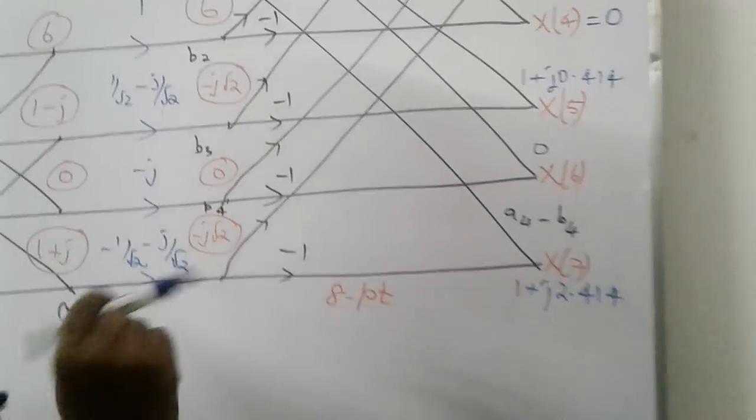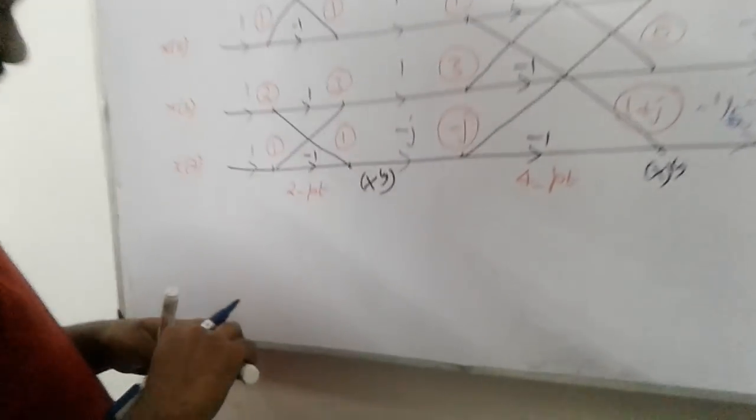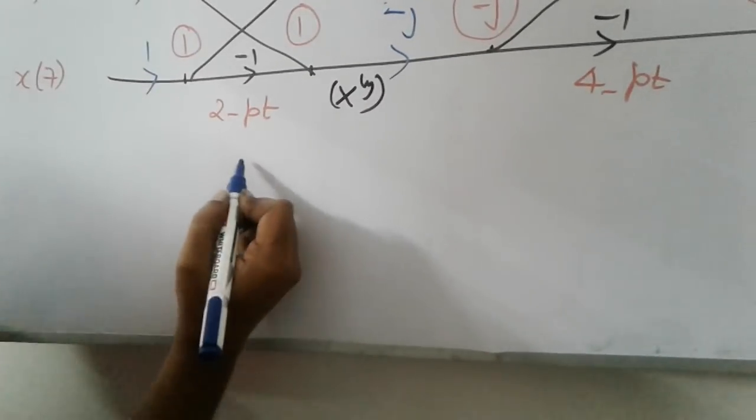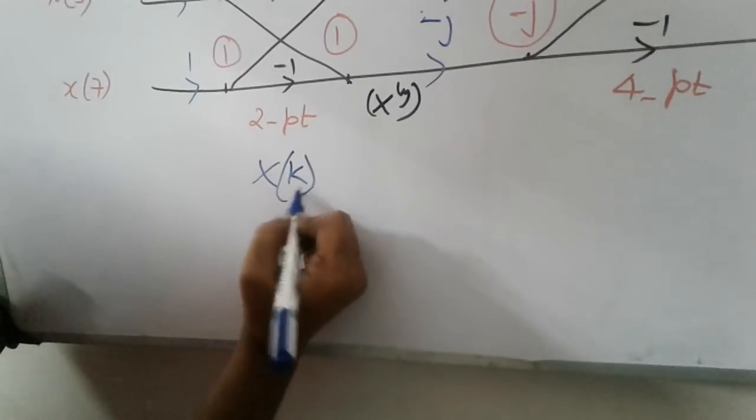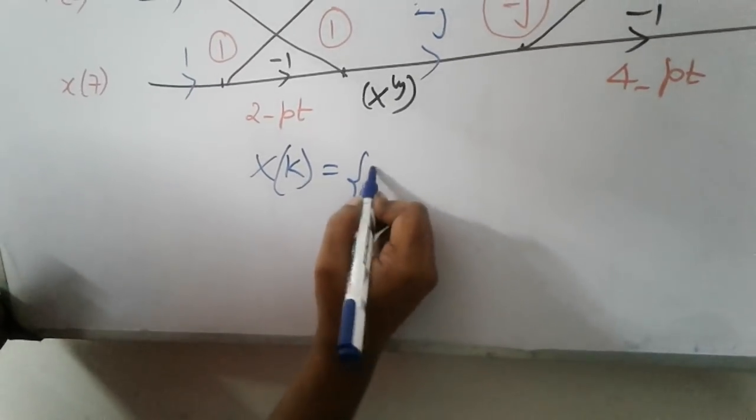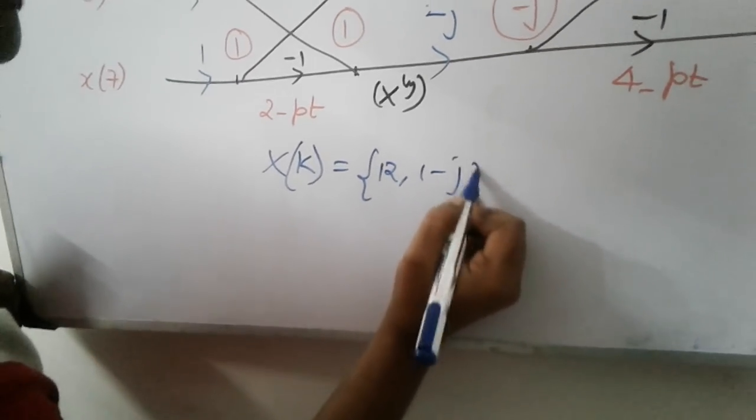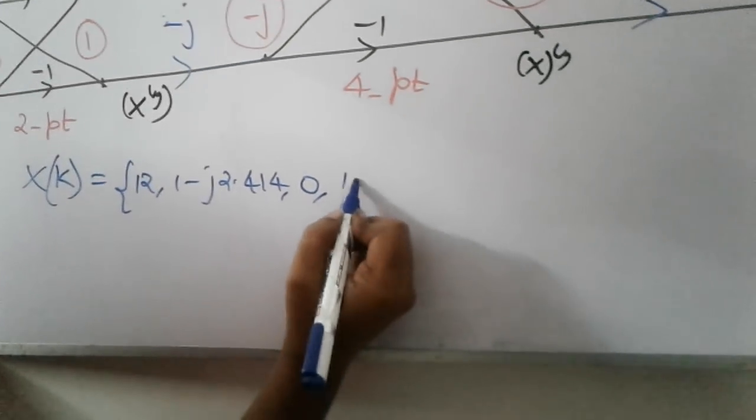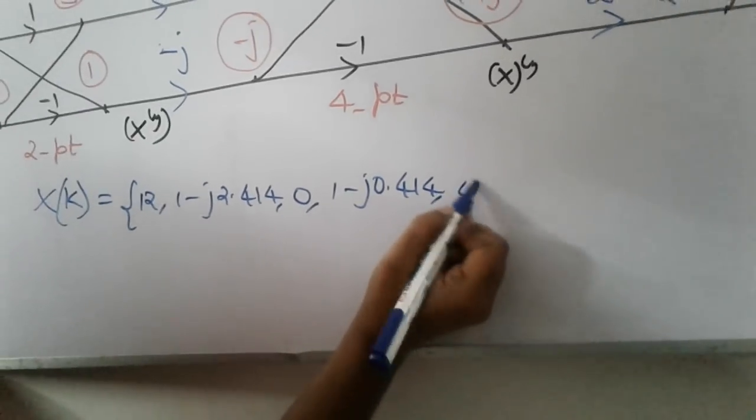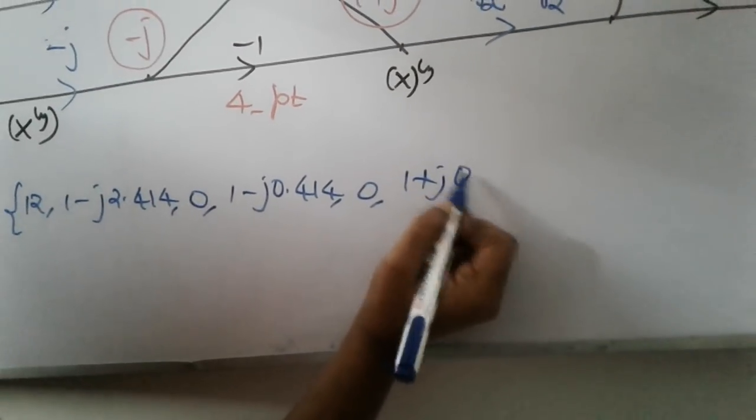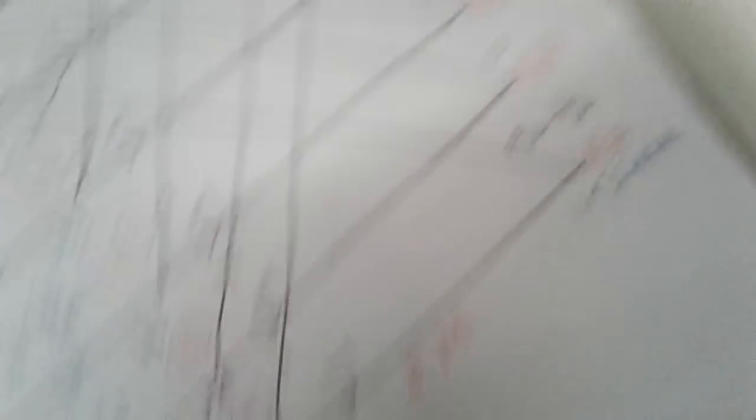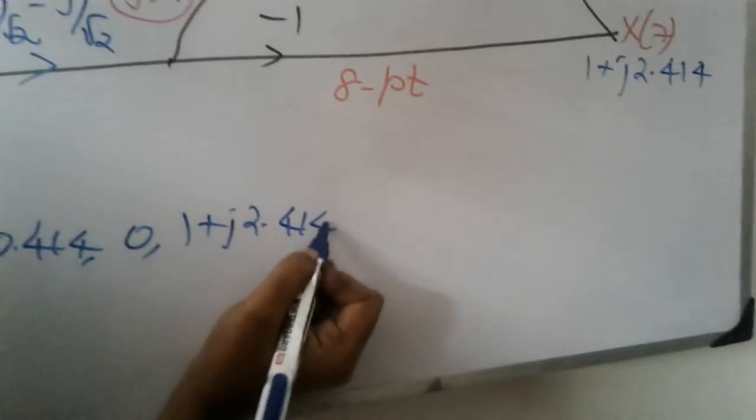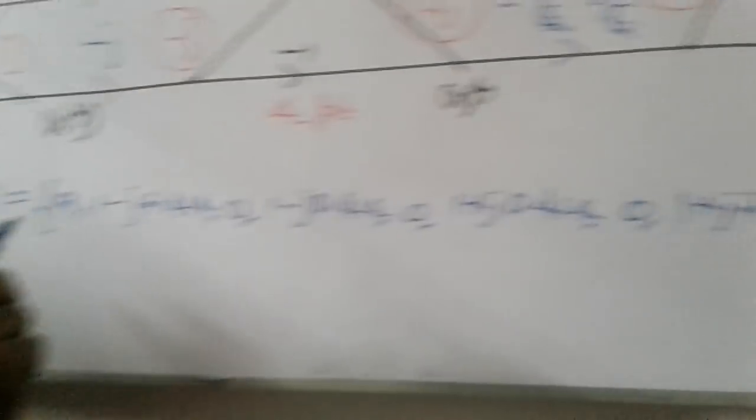Now don't keep the answers like that. Write it at the bottom. Make the examiner's job easy. 12, 1 minus j 2.414, 0, 1 minus j 0.414, 0, 1 plus j 0.414, 0, and the last one is 1 plus j 2.414. Now to verify this, there is a property.